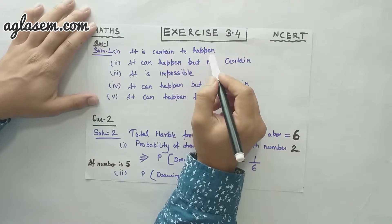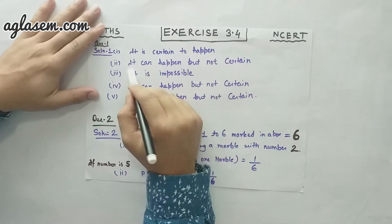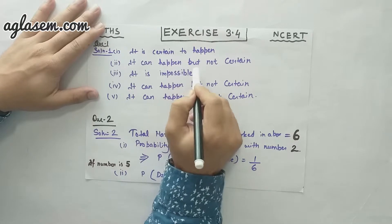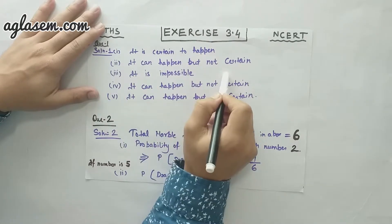The second part is: a tossed coin will land head up. It can happen but not certain. That is the answer.